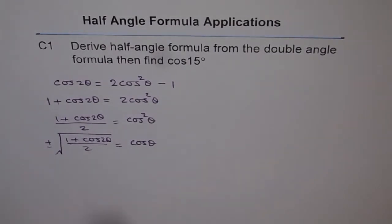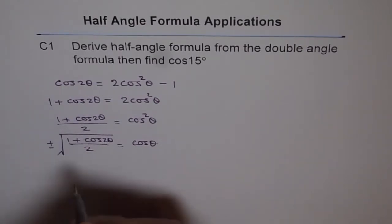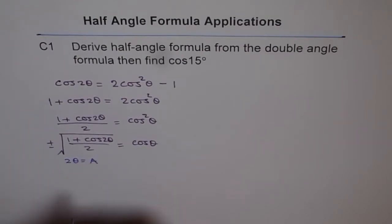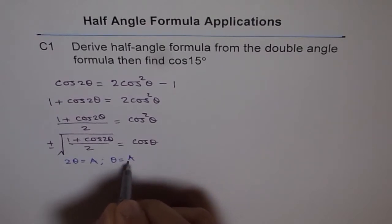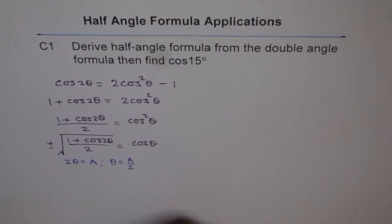So that is how we get cos θ in terms of 2θ. Now, we will do a small substitution. Let 2θ = a. Then what is θ equal to? Then θ = a/2, and that is what is half angle.